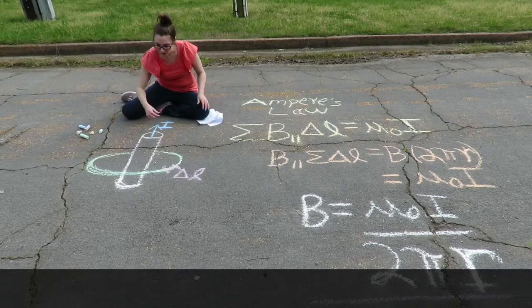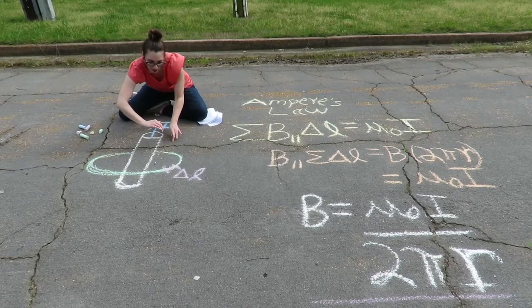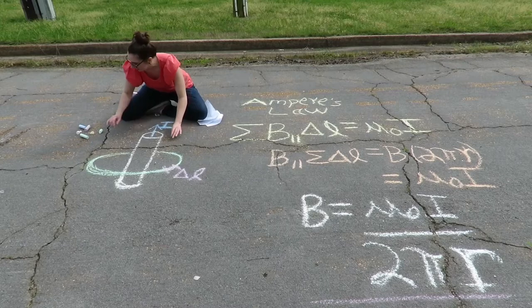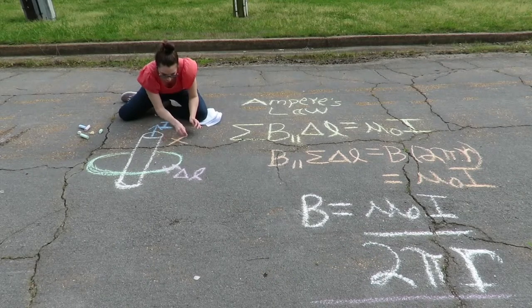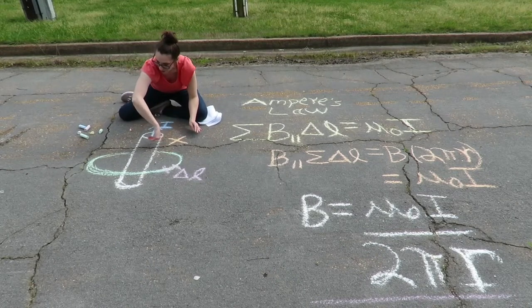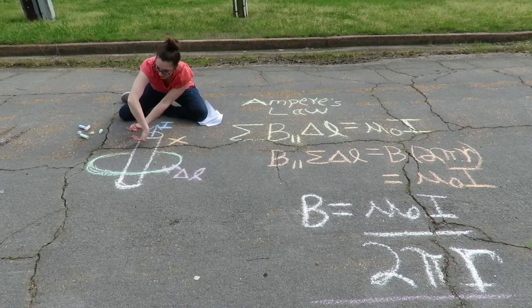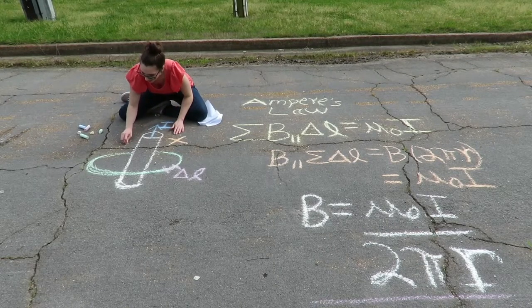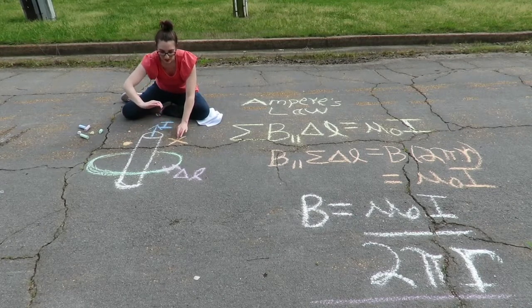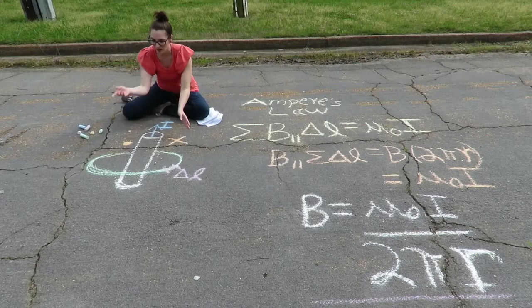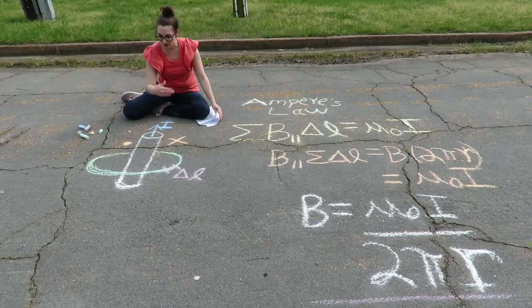For this particular wire, the current is running up, my thumb is pointing upward, and so my fingers on this side of the wire are pointing into the ground — we represent that as an X. My fingers keep curling around and on the other side of the wire they pop up out of the page, which we represent as a dot. So on this side the magnetic field is into the board, and on the other side it's coming out, making a circle around this wire.